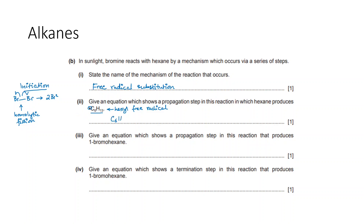Hexane reacts with a bromine free radical Br• from the initiation step. This produces HBr and the hexyl free radical C₆H₁₃•. In the next propagation step, the hexyl free radical reacts with a bromine molecule that did not undergo homolytic fission, giving one bromohexane C₆H₁₃Br and regenerating a bromine free radical.